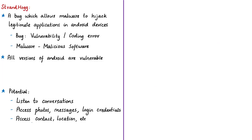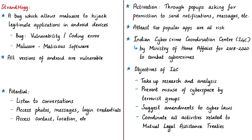The malware gets activated through pop-ups asking for permission to send notifications or messages — these are one of the main entry points for StrandHog to launch an attack. Another symptom: if a user already logged into an application receives a request to log in again, this could indicate a cyber attack by this bug. Once users approve such requests and log in, the malware instantly accesses the mobile phone or tablet. This is another threat to the privacy of individuals, putting personal data at risk. According to the National Cybercrime Threat Analytics Unit of I4C, at least 500 popular applications are at risk because of this malware.